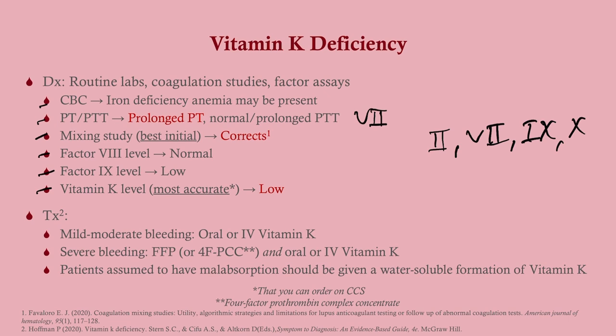For treatment, if bleeding is mild to moderate, just replace vitamin K. If bleeding is severe or internal, add fresh frozen plasma along with oral vitamin K. Remember to give IV vitamin K in patients with malabsorption, since giving a pill won't help if they can't absorb it. Do not give vitamin K intramuscularly to deficient patients — we don't want to precipitate a muscular hematoma. Use oral or IV, and IV if malabsorption is suspected.